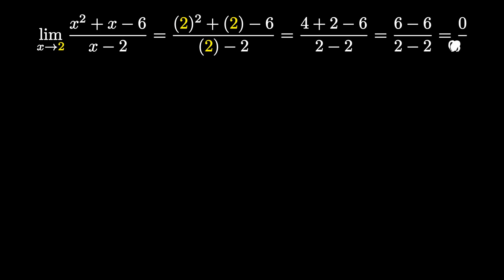So when we evaluate this limit we get 0 over 0. As you know, 0 over 0 is what we call the indeterminate form. It's important to know this does not mean our limit is DNE — you might think that since 0 is in the denominator it's DNE, but in this case, no, that does not mean that.